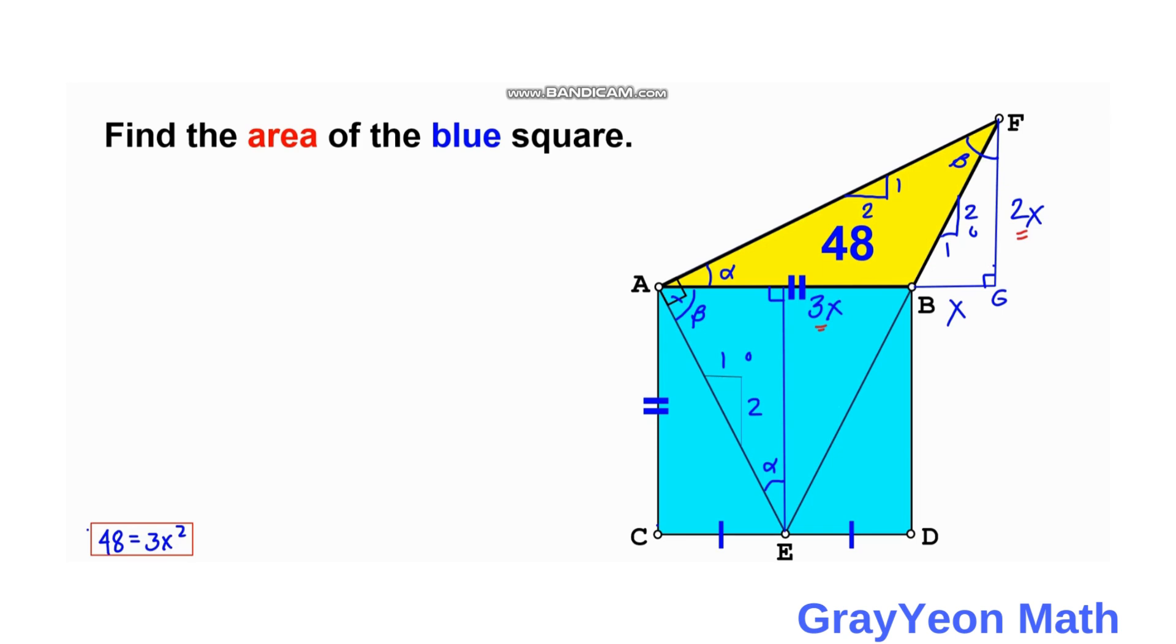Now for the area of the square, since we have the side as 3x, we need to square this. So the area of the square equals 9x squared, which equals 3 times 3x squared. And we know that 3x squared is actually 48, so area of the square equals 3 times 48. Therefore, the area of the square is 144 square units.